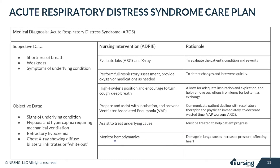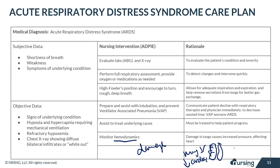Monitor the hemodynamics of your patient. The damage and decreased compliance in the lungs causes pressure to build up, which can increase pressure on the vessels — especially the major vessels — leading to decreased cardiac output. Hypoxia can also cause ischemia to the heart muscle, ultimately leading to cardiogenic shock.